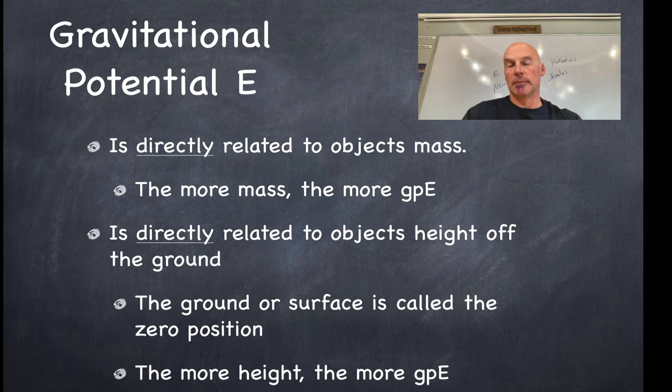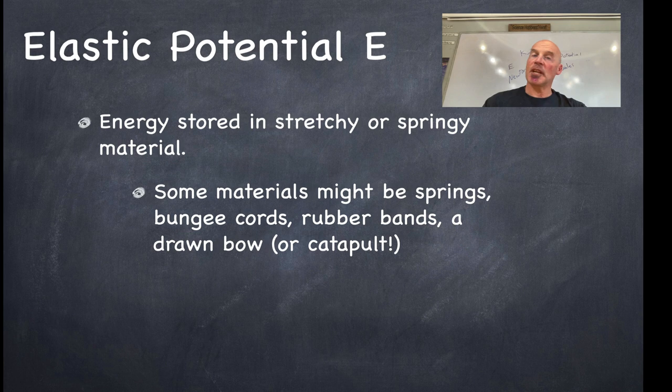Elastic potential energy. Elastic potential energy is energy stored in stretchy or springy material. So some materials might be springs, bungee cords, rubber bands, a drawn bow, or a catapult.